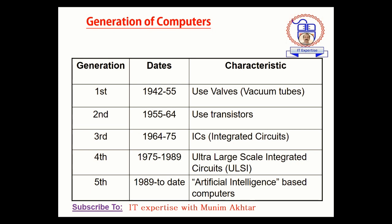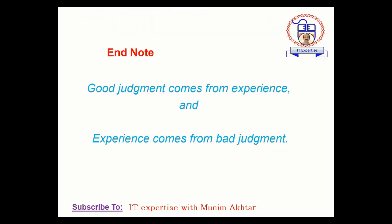The fifth generation started from 1989 and is still running. This generation uses artificial intelligence. Artificial intelligence means that your computer is more intelligent and more capable of performing tasks — just like what you are watching nowadays, where robots have come into every field, in terms of manufacturing fields and many other fields. That's why the fifth generation systems were designed and created.